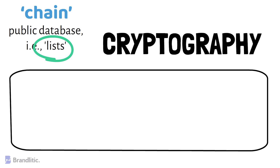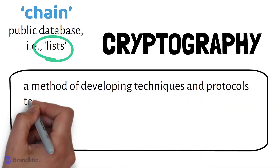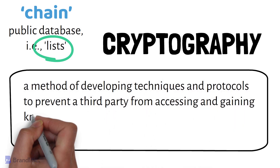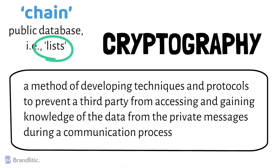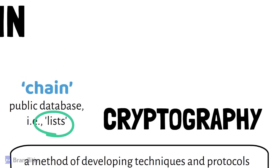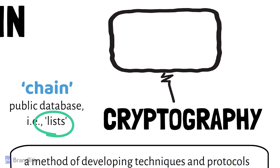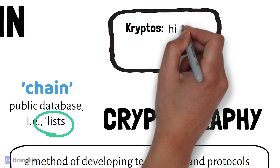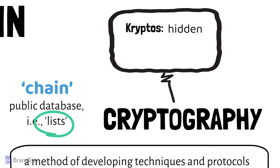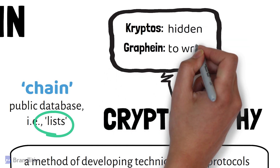By concept, cryptography is a method of developing techniques and protocols to prevent a third party from accessing and gaining knowledge of the data from private messages during a communication process. It is derived from two ancient Greek terms: cryptos, having the meaning of hidden, and graphene, having the meaning to write.